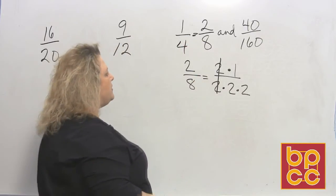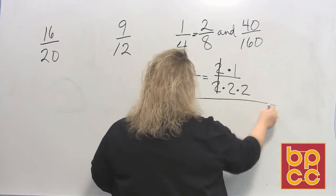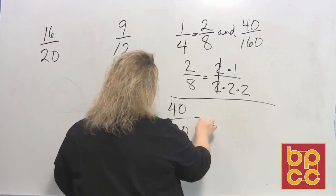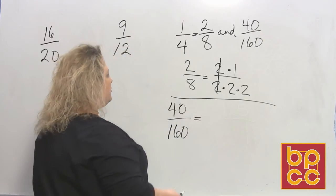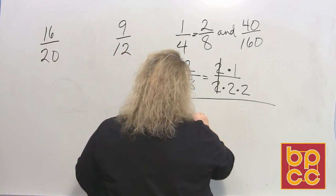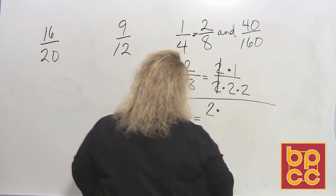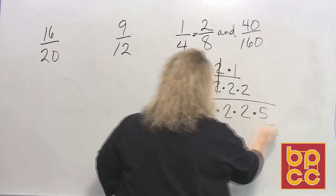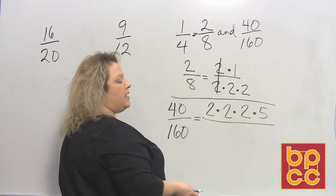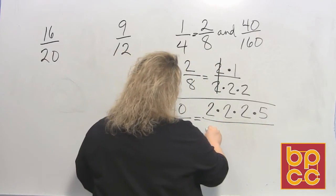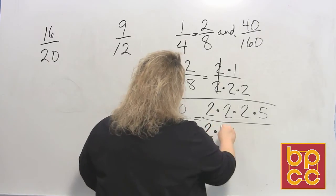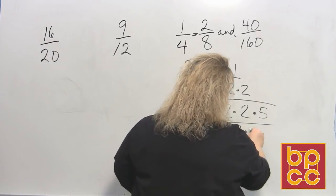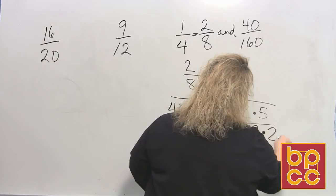Then I'm going to do 40 over 160 for that. Remember we do our prime factorization. That's going to take us a couple of minutes. So when I do this, if you want to do the factor trees, you can. That would be 2 times 20 and then 20 is 2 times 10 and 10 is 2 times 5. Then you do the same thing for 160. 160 is 2 times 80 which is 2 times 40 which is 2 times 20 which is 2 times 10 which is 2 times 5.